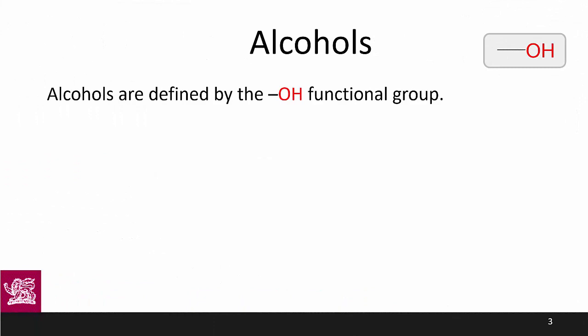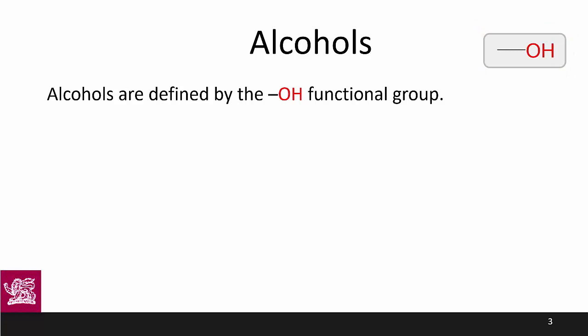First up we're going to be talking about alcohols. Alcohols are defined by the OH functional group. This is not a hydroxide — a hydroxide is an inorganic molecule, whereas this is an organic functional group, and therefore there is no similarity between the basic OH and the alcoholic OH. Alcohols occur when carbon is bonded to an OH, and that changes the chemistry. When naming alcohols we change the suffix: whatever was an '-e' now becomes '-ol'.